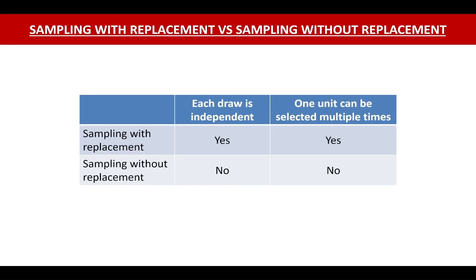To recap once again: in case of sampling with replacement, each draw is independent and one unit can be selected multiple number of times. Whereas in case of sampling without replacement, each draw is not independent and one unit can be selected only once — it cannot be selected multiple times.